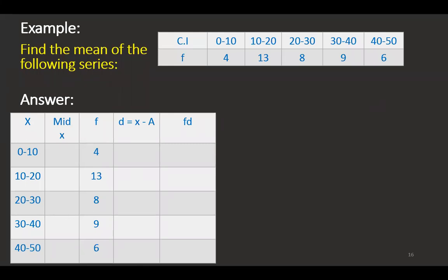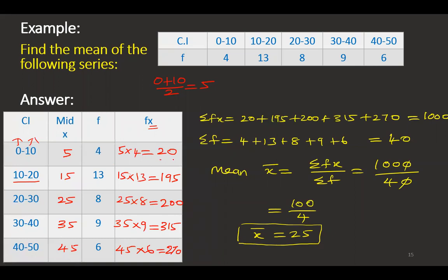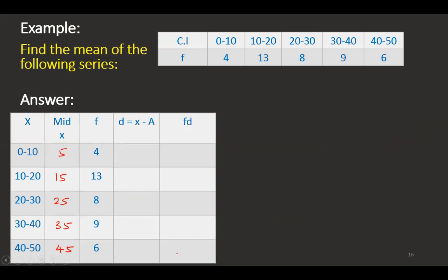Now we are going to find the mean of the same series using the shortcut method. As before, I am going to find the mid values: 5, 15, 25, 35, and 45. In the previous example our fx values were large numbers — 20, 195, 200, 315, 270 — so our objective is to reduce them to smaller numbers. That is why I am going to find deviations. I am going to choose a middle value as the assumed mean, which is 25.